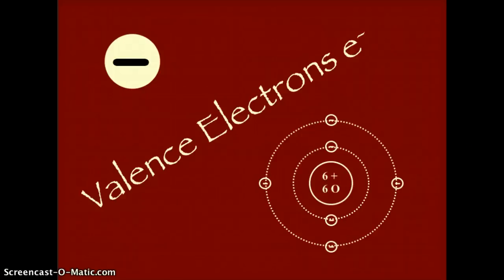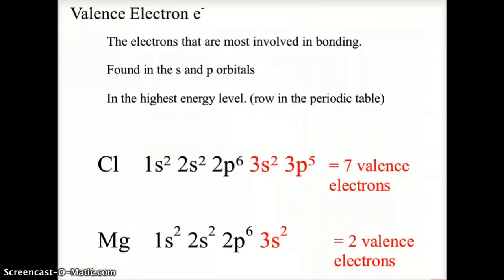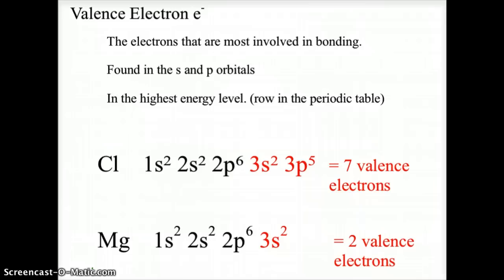Let's take a look at valence electrons. Valence electrons are the electrons most involved in the bonding processes between atoms. They are found in the s and p orbitals of the highest energy level, or the highest number for the periodic table row.